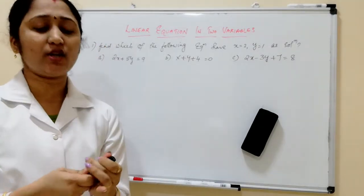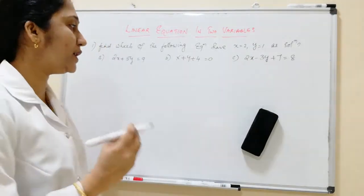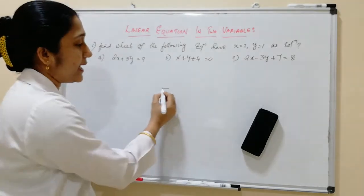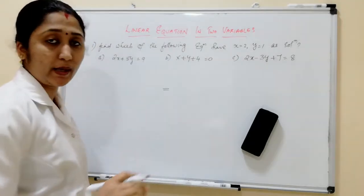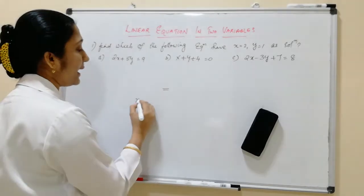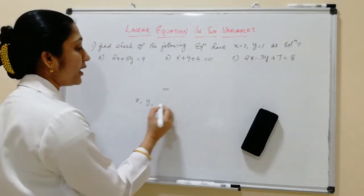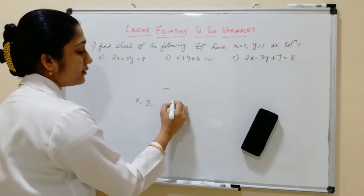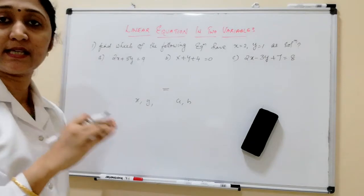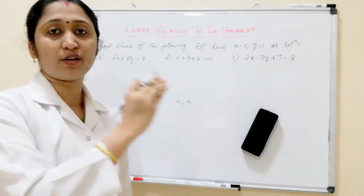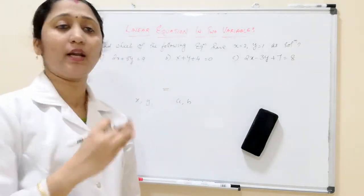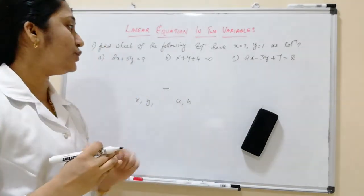What is a linear equation? A linear equation consists of an equal sign and two variables — X and Y, or A and B. Any equation consisting of two variables is called a linear equation in two variables.